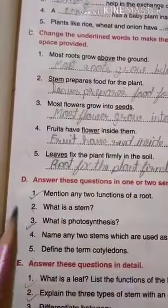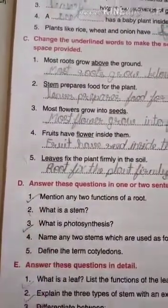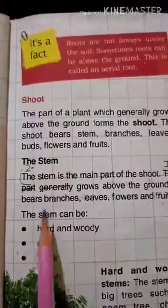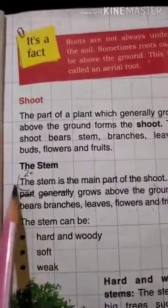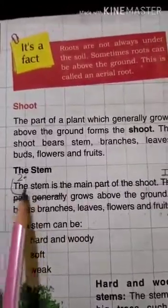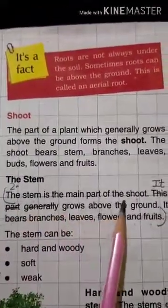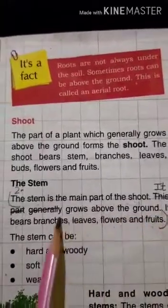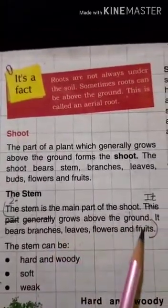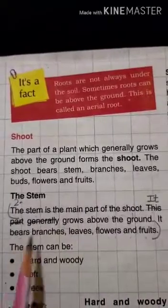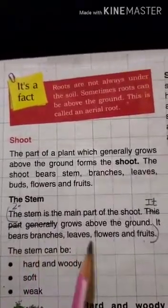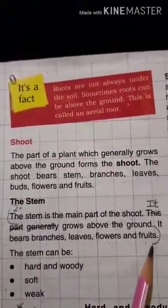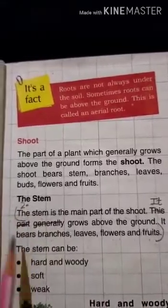Next question, number two: mention any two functions of a stem. The answer from page 49: the stem is the main part of the shoot. It grows above the ground. It bears branches, leaves, flowers, and fruit.